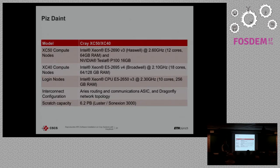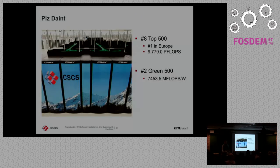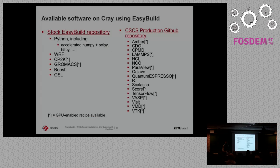Our main use case is Piz Daint, our main flagship system. It's a GPU-based system with two partitions: the largest partition with Tesla Pascal P100 GPUs, and then the broader partition. According to the Top 500, it is the eighth fastest supercomputer in the world, and according to the Green 500, it is the second most energy-efficient supercomputer with respect to energy consumption.